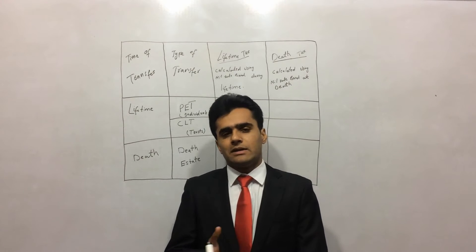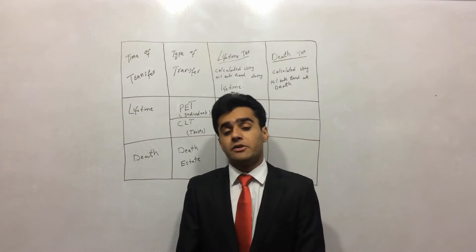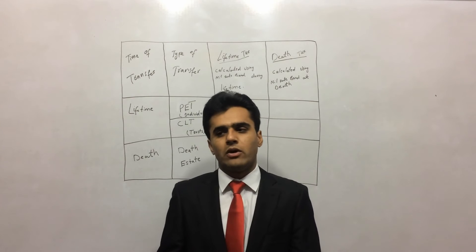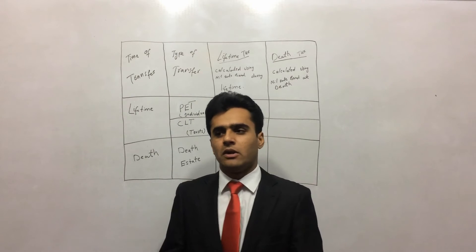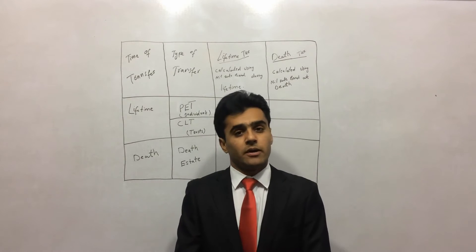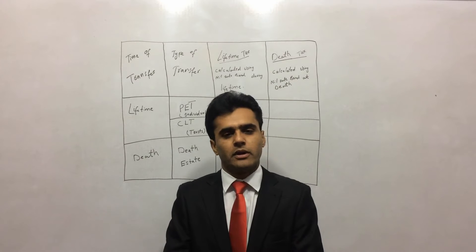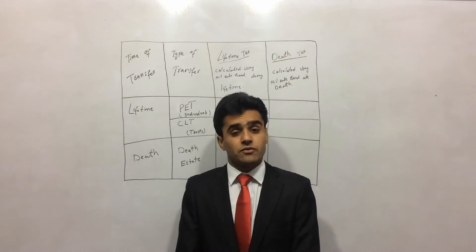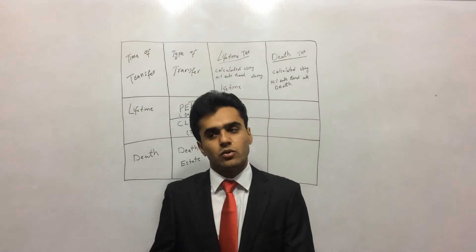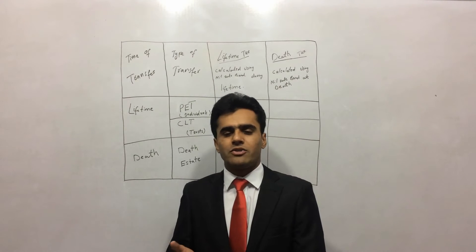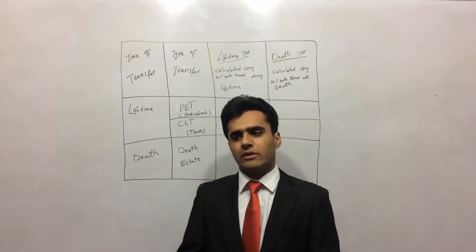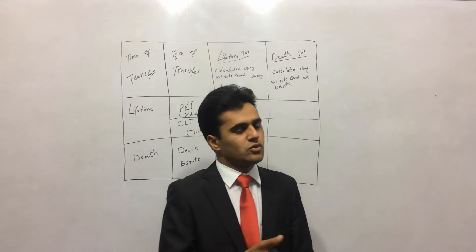Looking deeper, there are two other types of transfers as well. One time to transfer the asset is during lifetime and the other time is when you die. Additionally, there are two types of transfer recipients: you can transfer a gift to an individual or you can transfer an asset to a trust. So there are two types of transfers — one is to an individual and the other is to a trust.